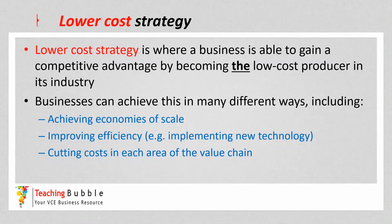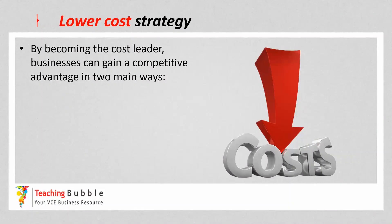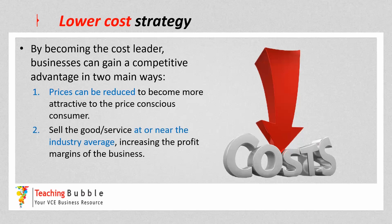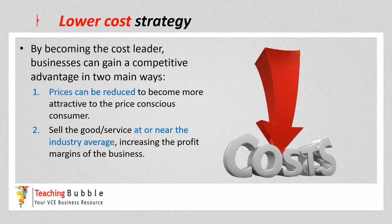The key point is that they are looking to be the cost leader in the industry. By becoming the cost leader, the business can gain a competitive advantage in two main ways. Firstly, it could lower its prices significantly and become attractive to the price-conscious customer — those that shop around for the best price. Or the business could sell at or near the industry average and therefore increase their profit margins, making more money than competitors for each sale. That extra profit can be used in other areas of the business to gain a competitive advantage.